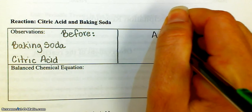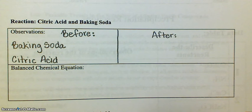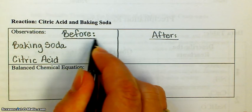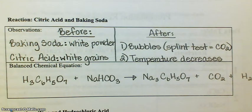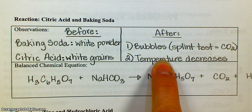Also, in the after, we had bubbles being given off. We used the splint test again, and when we put the splint into the test tube, it snuffed out, which indicated the presence of carbon dioxide. So the bubbles given off were carbon dioxide, and then there was also a decrease in temperature. So those are our after observations.